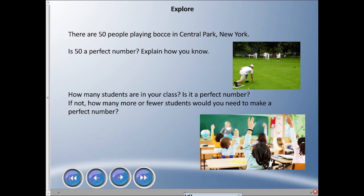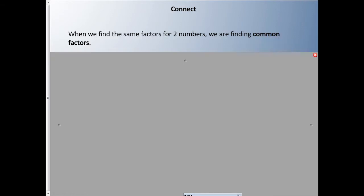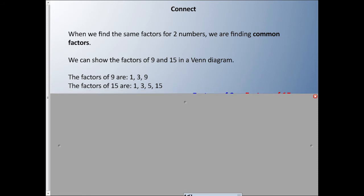Okay guys, so today we're going to talk about something called factors. We touched on it briefly in the last lesson, but we can use factors to find out what numbers have in common. When we find the same factors for two numbers or more, we are finding common factors. I can show the factors of 9 and 15 in a Venn diagram. The factors of 9 are 1, 3, and 9.